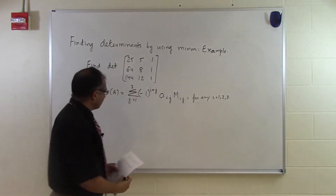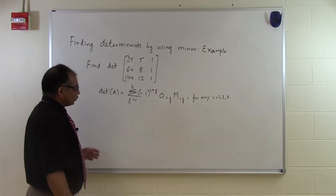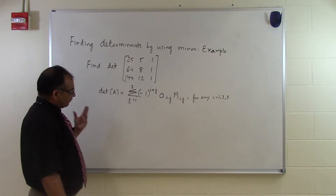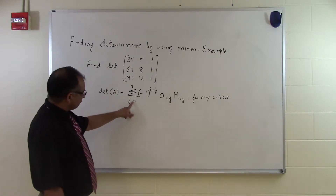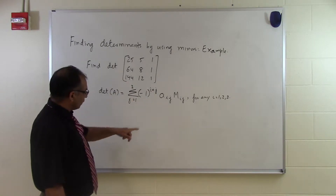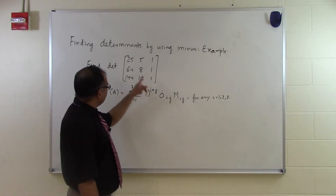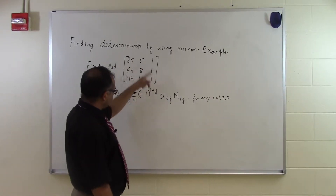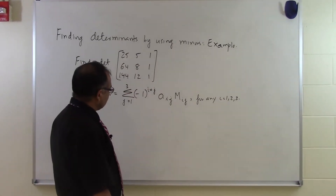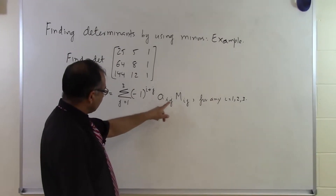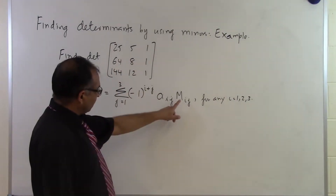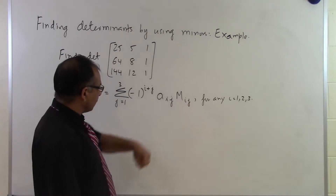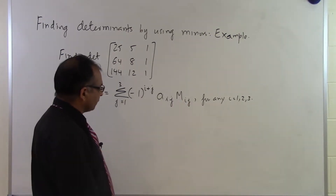This is a 3 by 3 matrix, so I can choose any row — i equal to 1, 2, or 3 — and then do this summation from j equal to 1, 2, 3, where a-sub-ij is the ijth entry of the A matrix, and m-sub-ij is the corresponding minor to that particular entry.